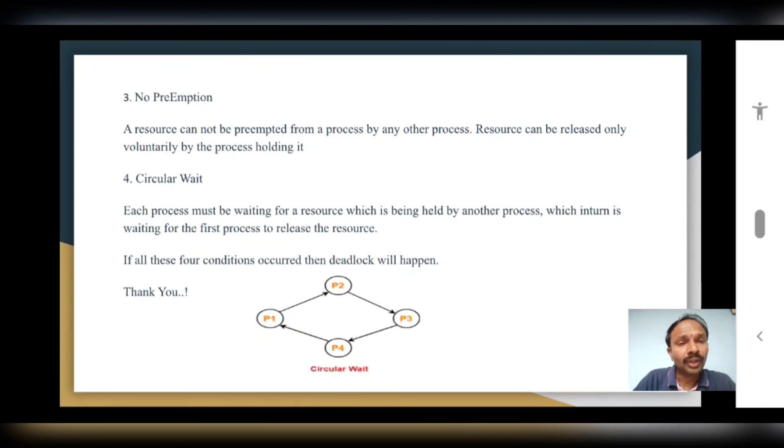P1 is waiting for P2, P2 is waiting for P3, P3 is waiting for P4, and P4 is again waiting for P1. Now if all these four conditions are there, then only the operating system will go into the deadlock. Thank you.